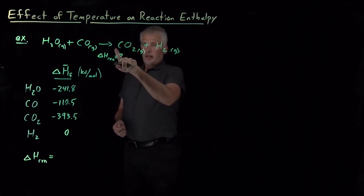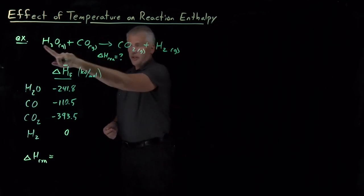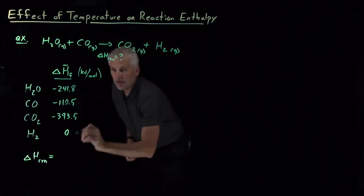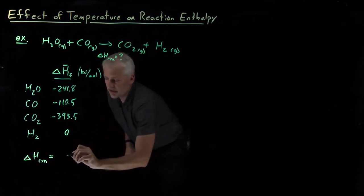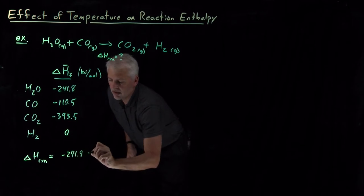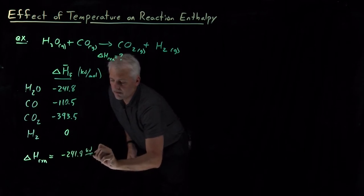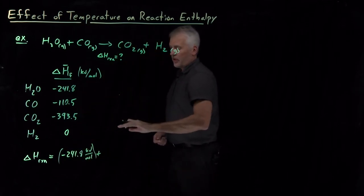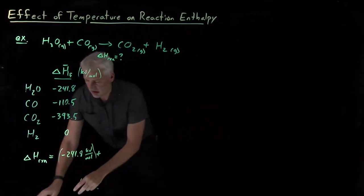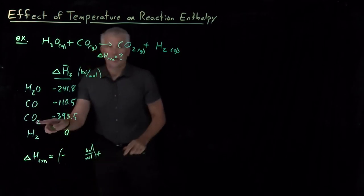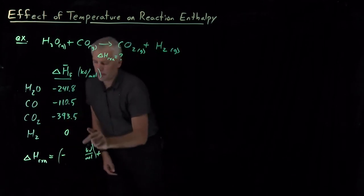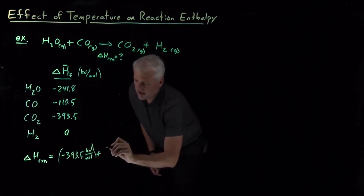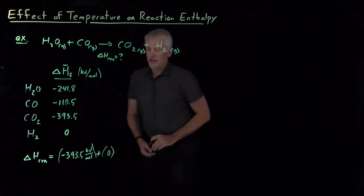The stoichiometric coefficients are all ones — negative ones for the reactants, positive ones for the products. Taking the enthalpies of formation for the products: CO₂ has an enthalpy of formation of negative 393.5 kilojoules per mole, and hydrogen, the other product, has an enthalpy of formation of zero.